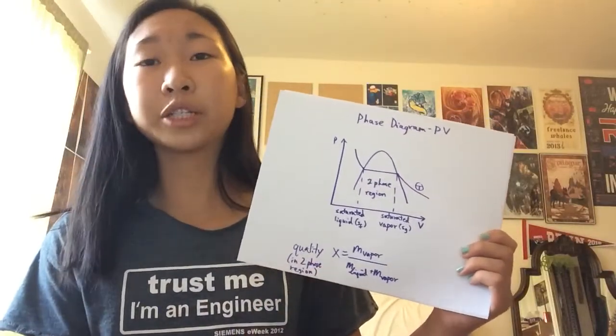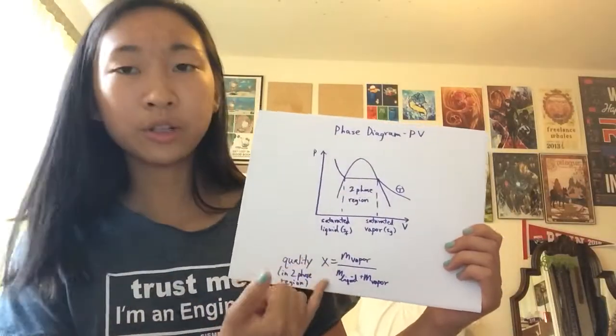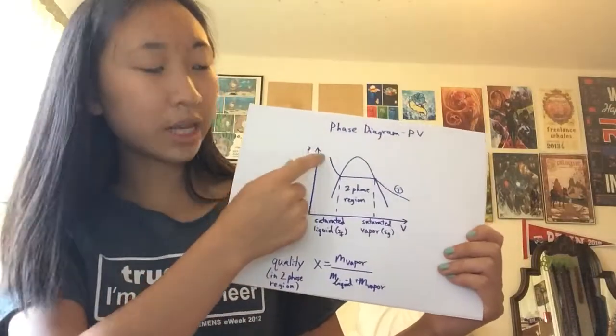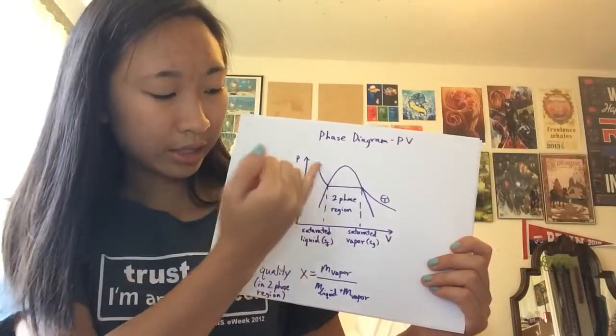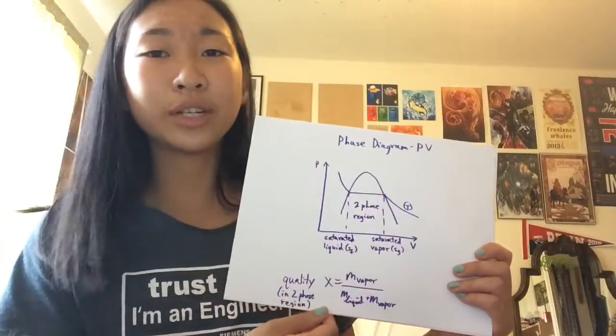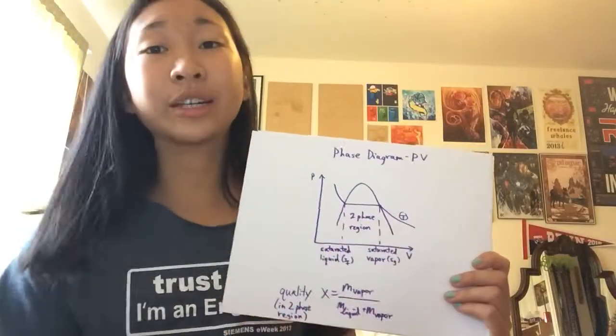So the quality is basically the ratio of vapor to the total mass. So you're going to have mass of vapor over mass of liquid plus mass of vapor. On this isotherm, you'll start here, get to the saturated liquid at this point, increase in quality across the two-phase region, and then over here, you'll be saturated vapor, and then vapor continuing onwards.